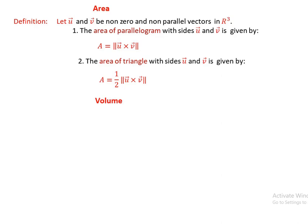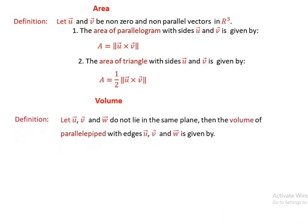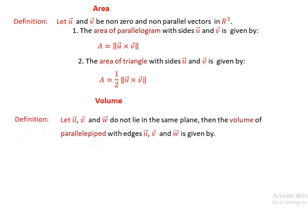The other application is volume. As a definition, let u, v, and w be vectors that do not lie in the same plane. Then the volume of the parallelepiped with sides u, v, and w is given by: V equals the absolute value of u dot (v cross w), which equals the absolute value of v dot (w cross u), which equals the absolute value of w dot (u cross v).